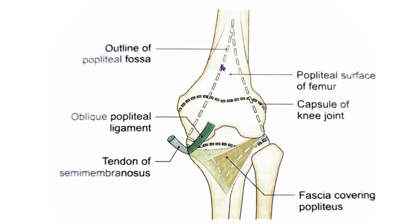The floor of the popliteal fossa is formed from above downwards by the popliteal surface of the femur, the capsule of the knee joint along with the oblique popliteal ligament, and finally the strong popliteal fascia covering the popliteus muscle.